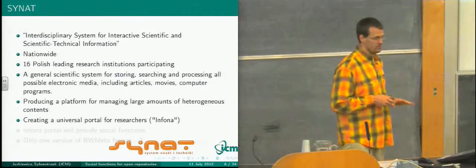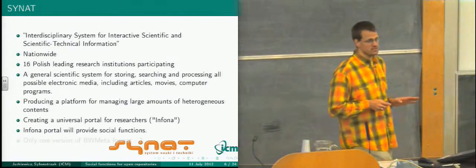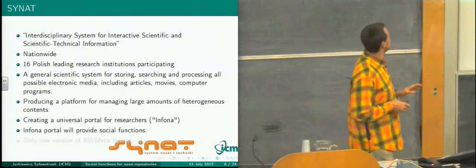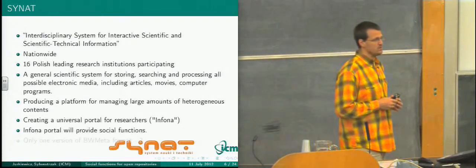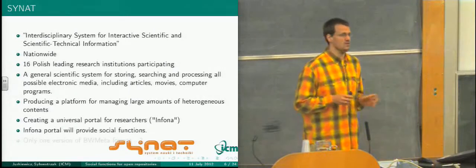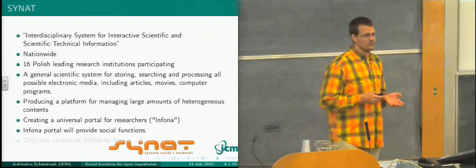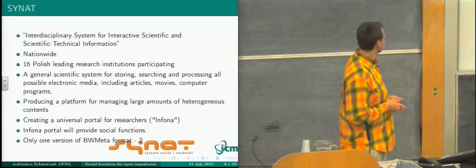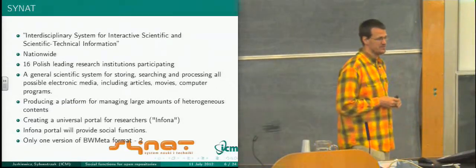In ICM, we produce the basic platform for storing and indexing this data, and we are creating a universal portal for researchers called Infona. The Infona portal has some social functions — a little bit later I will show you what social functions are demanded by scientists. This project is financed by NCBIR, a Polish government agency responsible for financing part of science. From the signed contract, we can get functional requirements. In this project, we will use only one version of the BWMeta format — version 2 — which simplifies the system a lot.